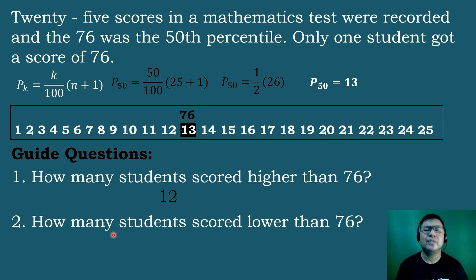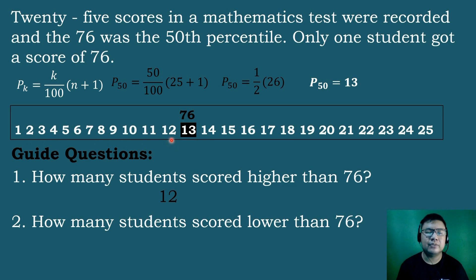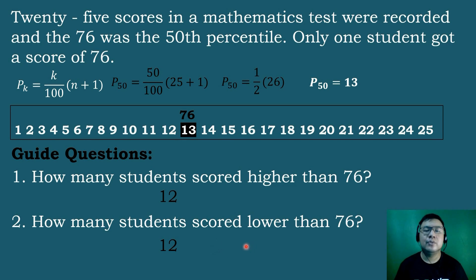How many students scored lower than 76? Counting the scores below 76, there are also 12 students who scored lower than 76.